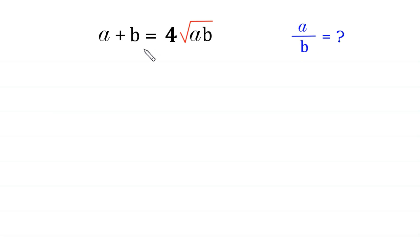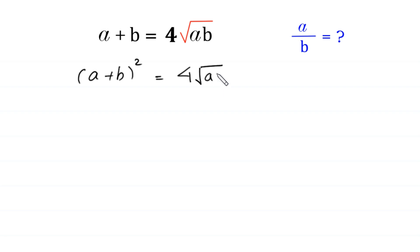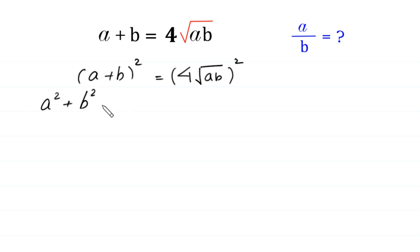A plus b squared is equal to four times square root of ab, squared. Now this (a plus b) whole squared is equal to a squared plus b squared plus 2ab, which equals sixteen ab — because four squared is sixteen and the square cancels with the square root.